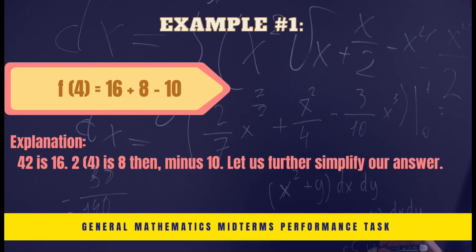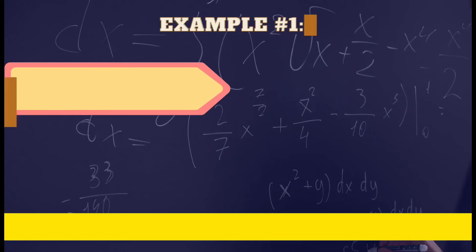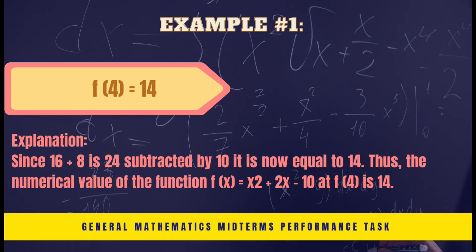Then minus 10. Let us further simplify our answer. Since 16 plus 8 is 24 subtracted by 10, it is now equal to 14. Thus, the numerical value of the function f(x) equals x squared plus 2x minus 10 at f(4) is 14.